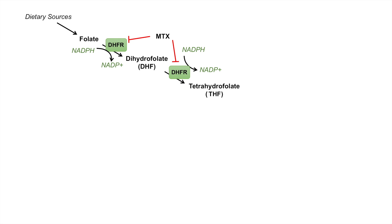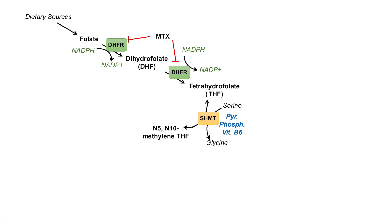Once we have tetrahydrofolate, it can be acted on by an enzyme known as serine hydroxymethyltransferase to form N5,N10-methylene tetrahydrofolate. As its name suggests, serine hydroxymethyltransferase, or SHMT, utilizes a serine amino acid — it donates a hydroxy and a methyl group from serine to tetrahydrofolate. In the process, serine actually becomes the amino acid glycine. This enzyme requires pyridoxal phosphate, a derivative of vitamin B6.